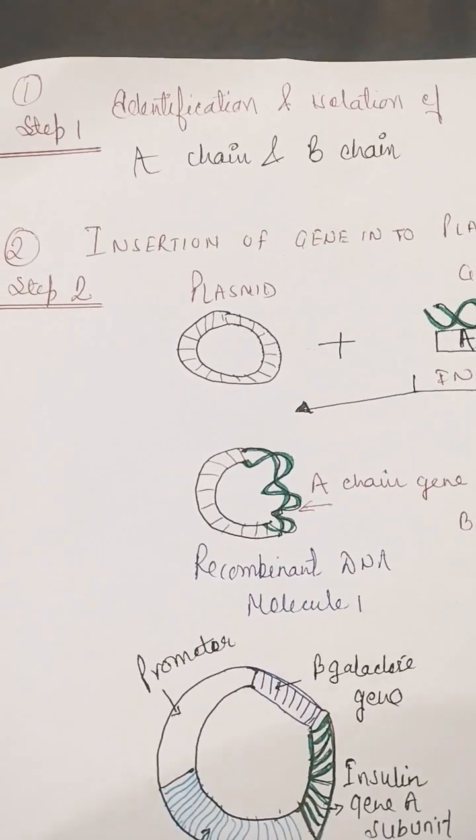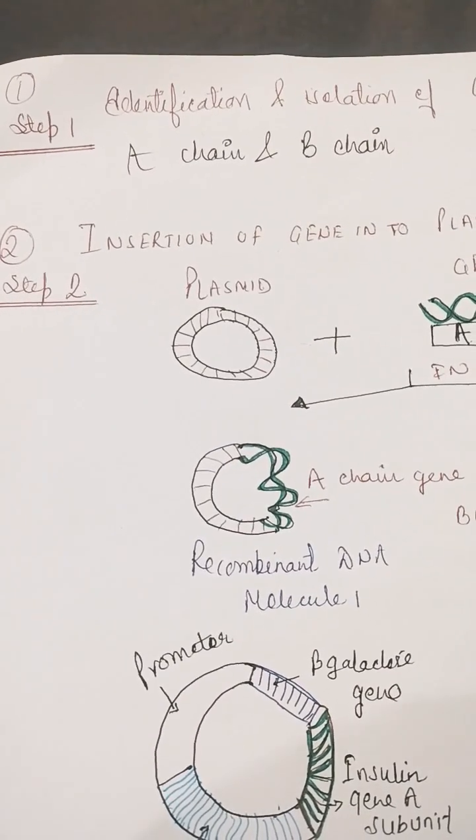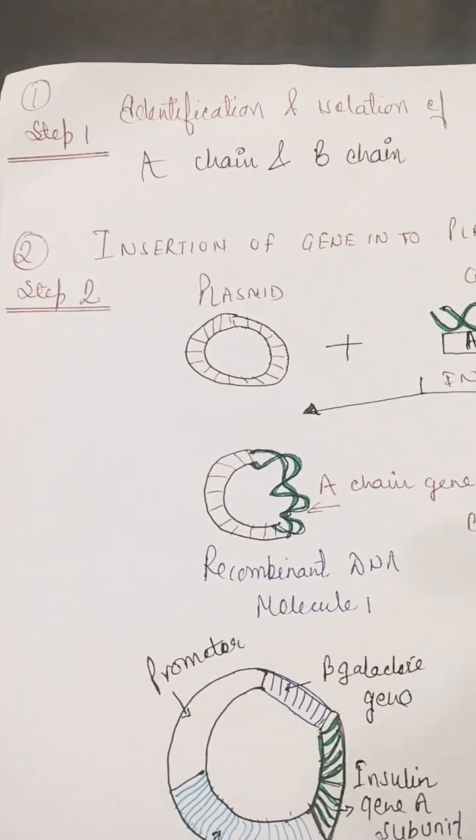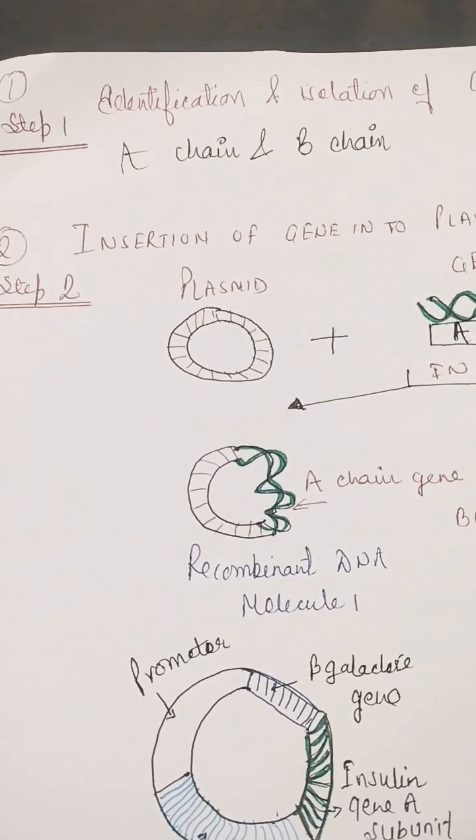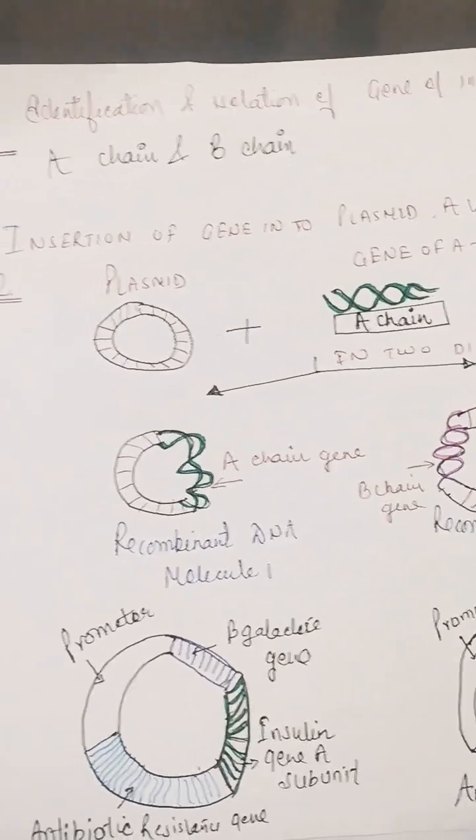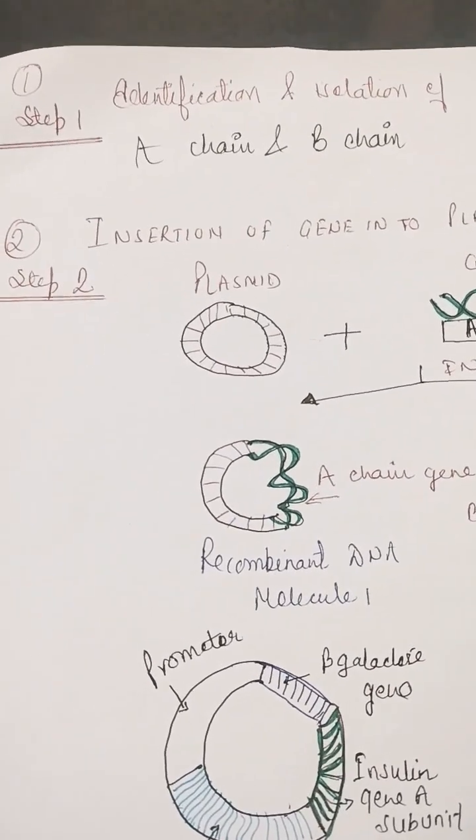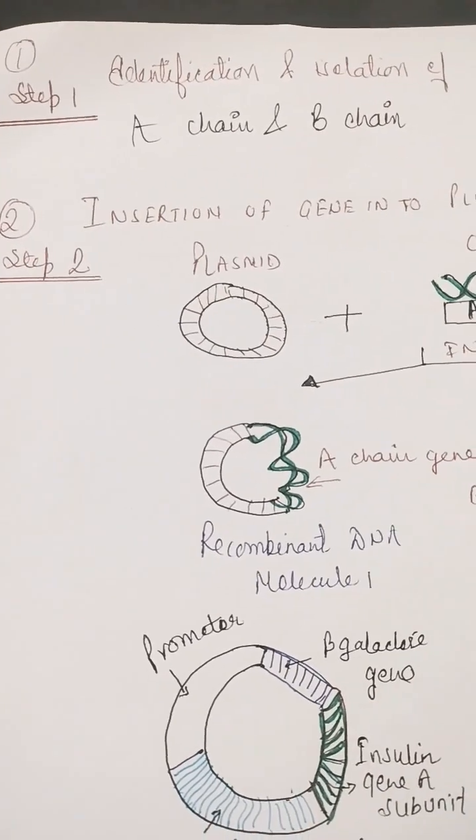The steps involved in the production of insulin hormone by recombinant DNA technology. There are basically five steps. Step number one is identification and isolation of gene of interest, which can be done by chemical synthesis. Second step is insertion